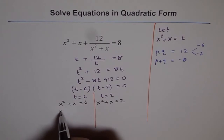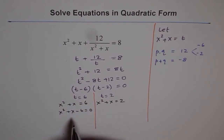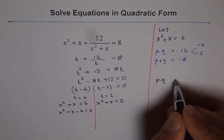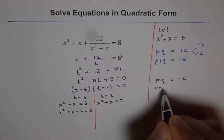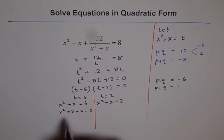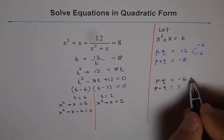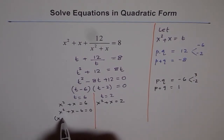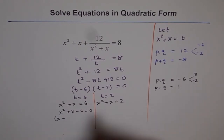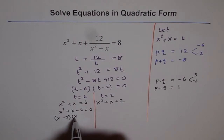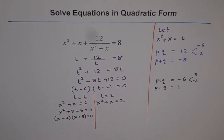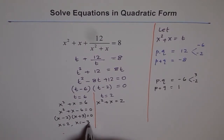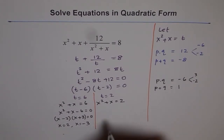From t equals 6, we get x squared plus x minus 6 equals 0. We need two numbers whose product is minus 6 and sum is 1. Those are 3 and minus 2. So the equation factors as x minus 2 times x plus 3 equals 0, giving us x equals 2 or x equals minus 3.